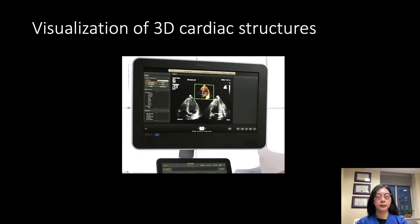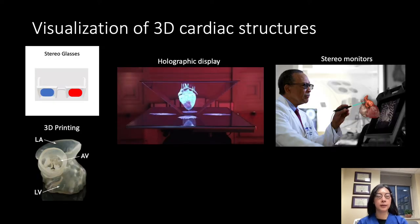All of these developments are really trying to make the 2D screen look more 3D-like, because we've acquired a 3D data set but then present it on a 2D screen. There are methods now to address some of that — some not so new, like stereo glasses. 3D printing has been around for a couple of years. Other things, like holographic display, are being worked on by companies, as well as stereo monitors.